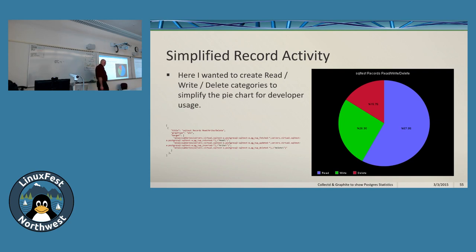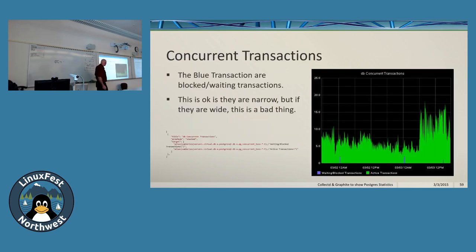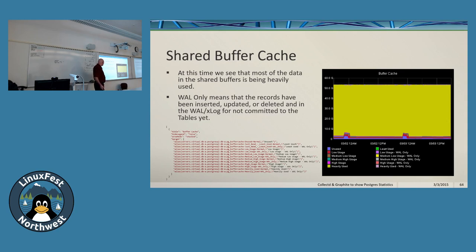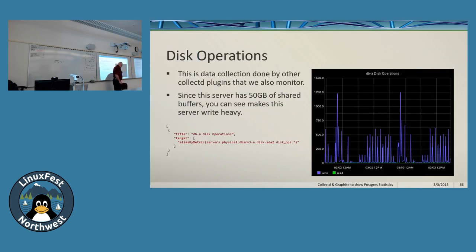We have a simplified record activity view showing just read, write, and delete. For concurrent transactions, we can see waiting or blocked transactions in blue and active transactions around them. For disk activity, we have very little read because we store most data in RAM, so we're just write-heavy. For network activity, you'll see a lot of transmit traffic from the A to B servers and a lot of received traffic on the B servers, especially during a pg_basebackup.